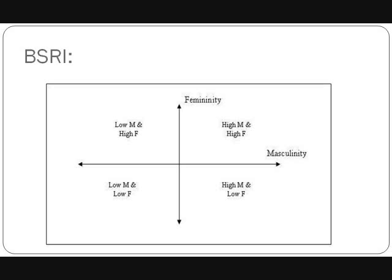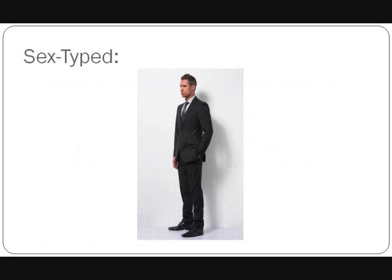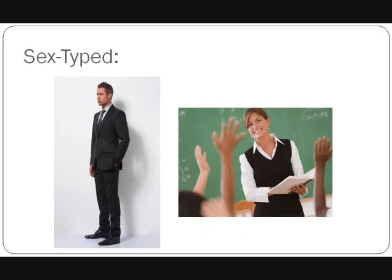Bem argued that sex-typed individuals process information in gender-linked ways. For example, if a man scores high in masculinity and low in femininity, he would be identified as masculine by gender and therefore is sex-typed. Sex-typed individuals are more likely to regulate their personal behavior to meet the standards set forth by society. Sex-typed individuals demonstrate consistency between their sex and what society deems appropriate for their gender. A sex-typed man might show traits such as independence, aggression, or dominance. A sex-typed woman might show female traits such as sympathy, understanding, and affection. Both the sex-typed man and woman interpret gender to be an important way of defining their own attributes and behaviors.